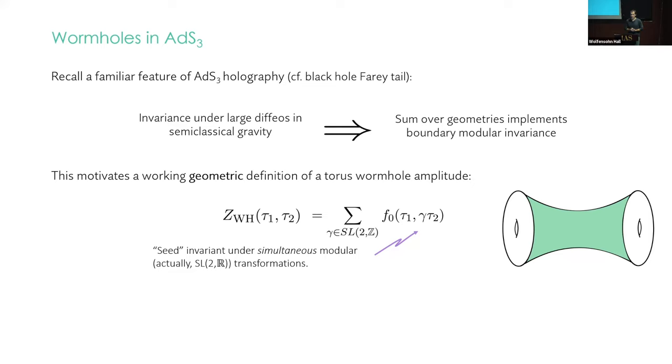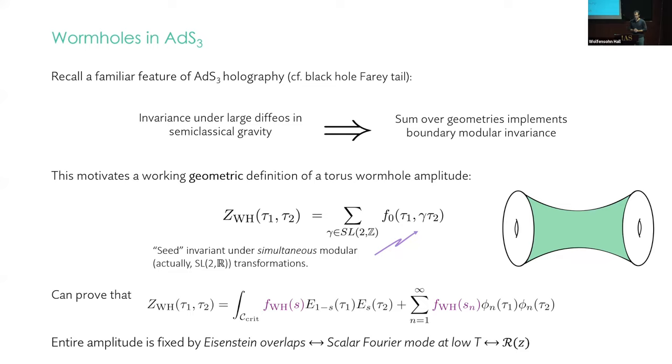This is just the definition of what we're going to mean by torus wormhole. And you can prove that these types of functions have some special properties. The main one I want to highlight, well there are two. One of them is implicit here. You can show that in the spectral language functions of this form take this form in the spectral decomposition. They are, first of all, Hecke symmetric. That is, the eigenfunctions are paired. And second of all, the overlaps sitting in front are the same for the Eisenstein and the cusp form pieces.